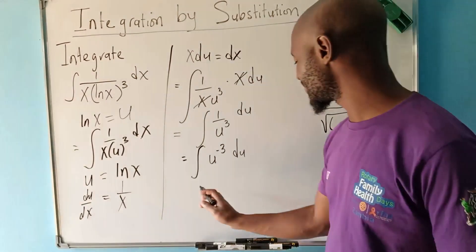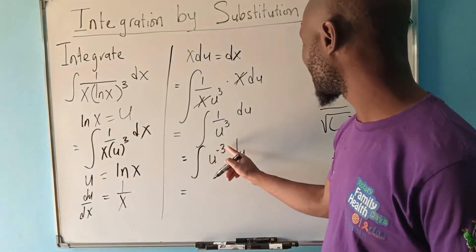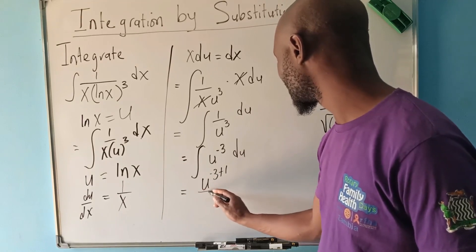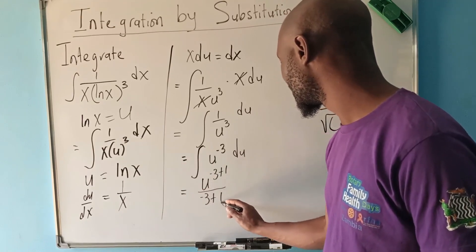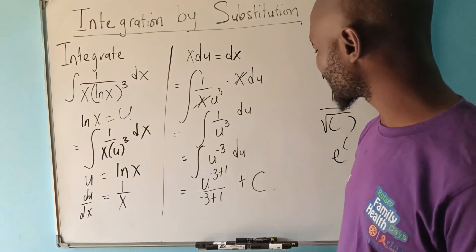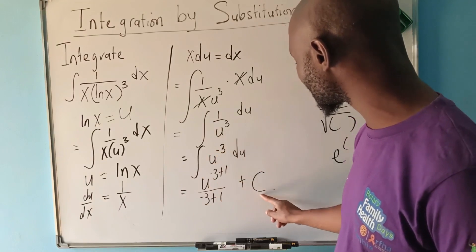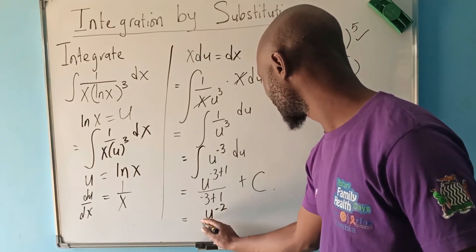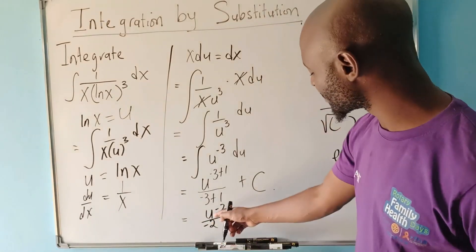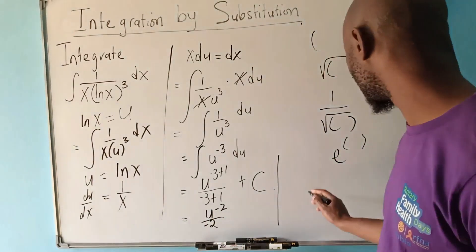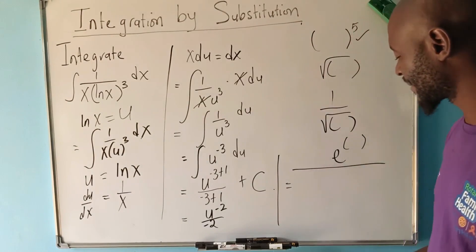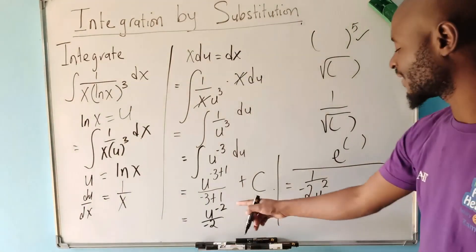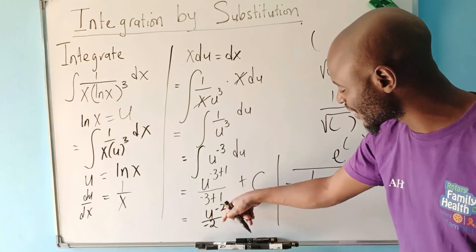Now we can apply the power rule. We increase the power by one, so negative three plus one gives negative two. This gives us u to the power negative two over negative two, plus the constant c. Every time you are integrating without limits, you must include the constant of integration c. This simplifies to one over negative two times u squared.